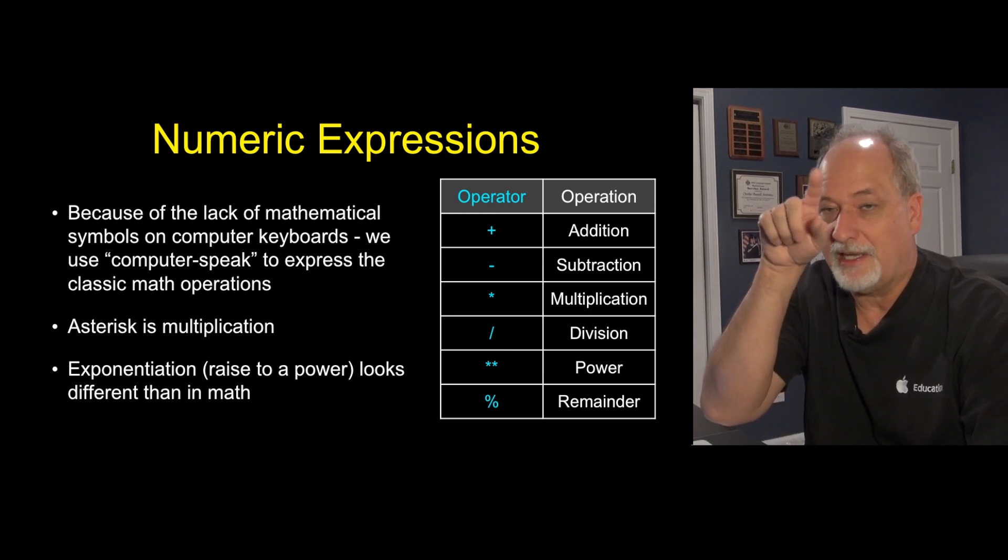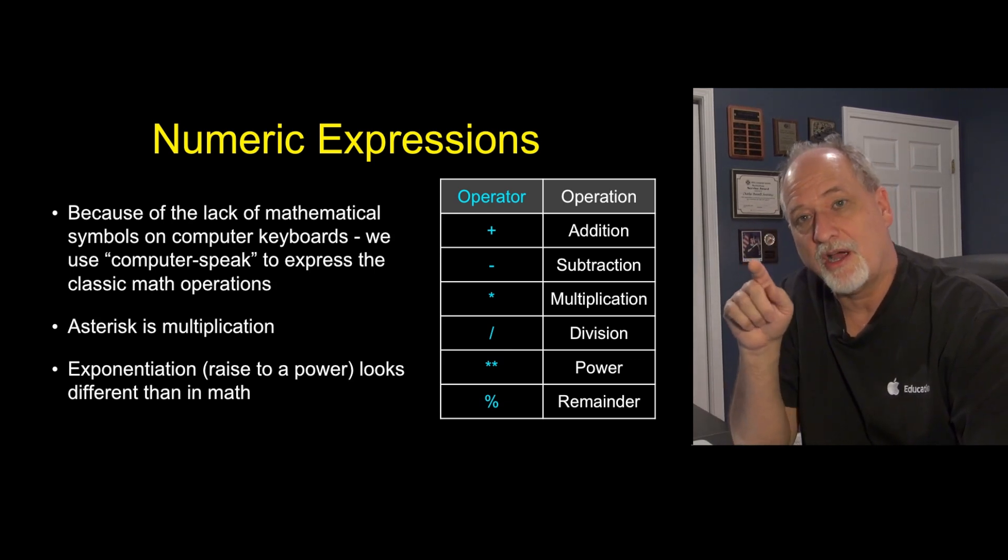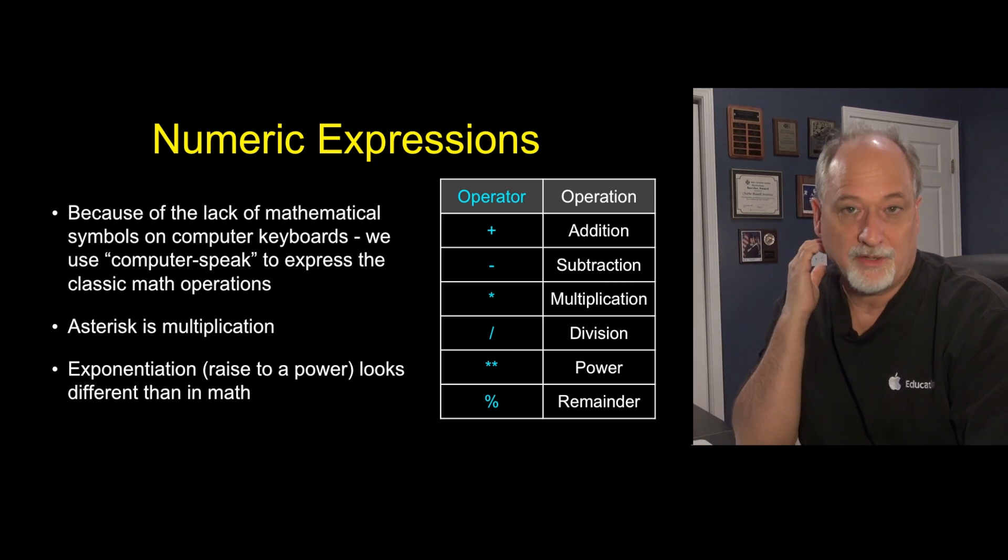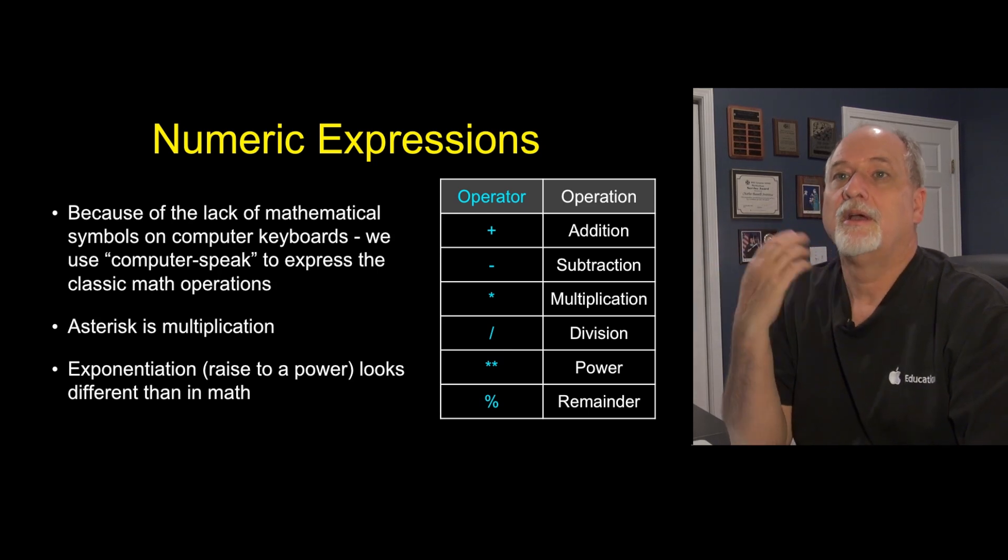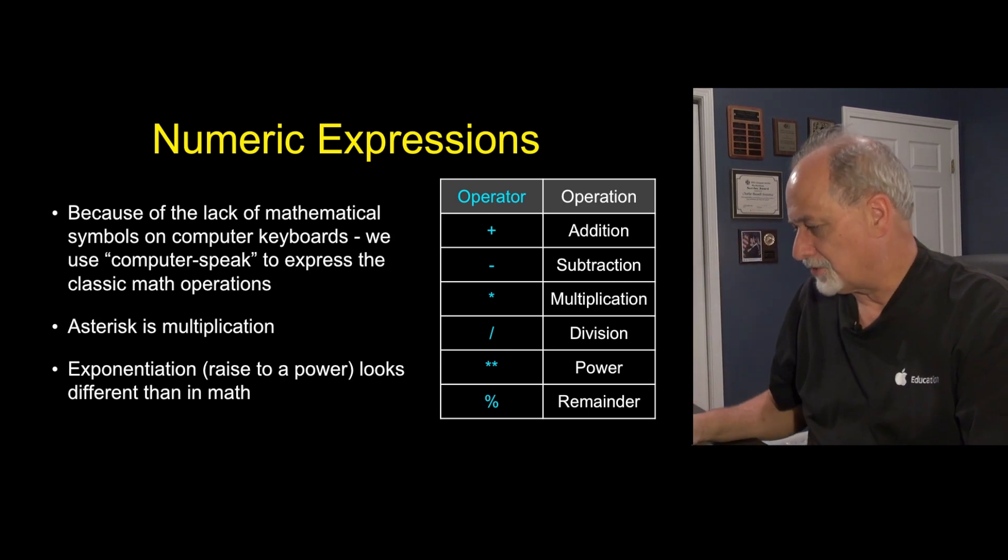Raising to the power, because it didn't have little characters back then, is star star, which is raising to the power. And then remainder. Remainder is when you do integer division, it's also called the modulo operator. It's the remainder, not the quotient. And I've got a picture of that coming up.